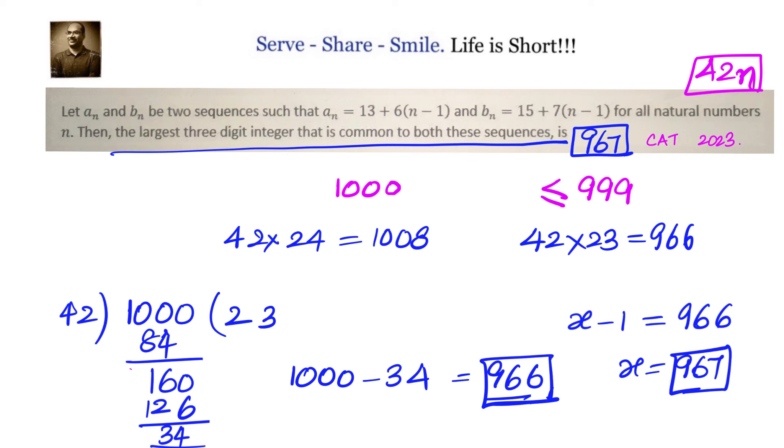We understood that if you take that integer as x, then when you divide by 6 it should leave a remainder of 1. When you divide by 7, it also has to leave a remainder of 1. That means x minus 1 is a multiple of 42. So the largest 3-digit number which is a multiple of 42 is 966, so x becomes 967.